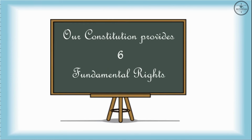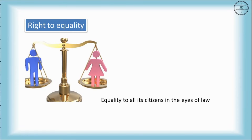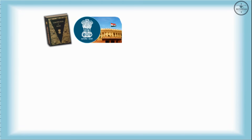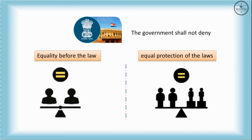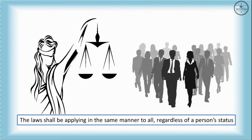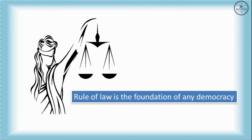The first is the Right to Equality. It grants equality to all citizens in the eyes of the law. The Constitution of India says that the government shall not deny equality before the law or the equal protection of the laws. The laws shall be applied in the same manner to all, regardless of a person's status. This is called the rule of law, which is the foundation of any democracy.